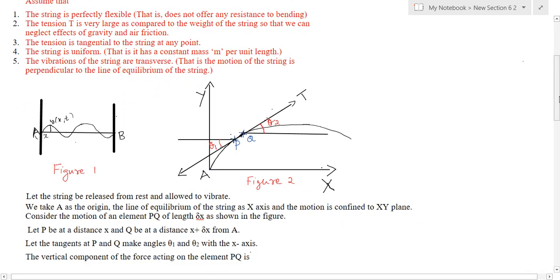When the string is released and allowed to vibrate, we consider the motion of an element PQ of length delta x. It is depicted in the second figure by taking A as the origin and the line of equilibrium as the x-axis. We consider P as a point at distance x from A, and Q at a distance x plus delta x from A. We draw tangents at P and Q, where the tangent at P makes angle theta1 with the x-axis and the tangent at Q makes angle theta2 with the x-axis.